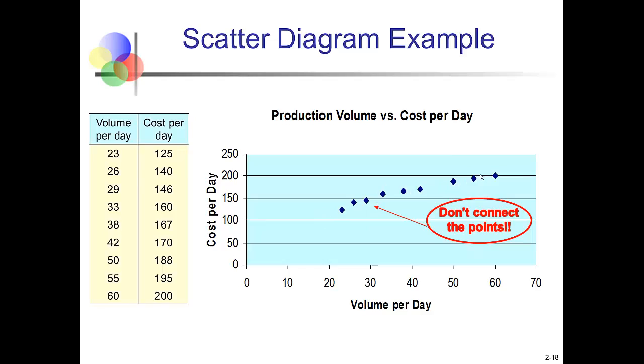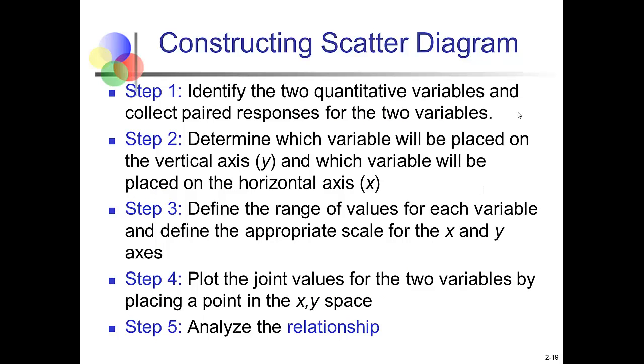So how do we actually construct a scatter diagram? We have to figure out what the two variables are that we believe are related to each other and collect paired responses for those variables. Determine which variable should go on the y-axis. That's always your dependent variable. And determine which variable should be placed on the horizontal axis. That's your independent variable. Define the range of values for each variable and define the appropriate scale. That again allows us to make a graph that makes sense. Then we're going to plot the x-y pairs for each of those variables. In Excel, you can do this very easily if you make sure that your x variable is on the left and the y variable is on the right in the spreadsheet. Then when you highlight them to put them into a scatter plot, they'll go on the appropriate axes. The last step is to analyze the relationship between the two variables. Is there an increasing relationship or a decreasing relationship? Or maybe those two variables are not related at all.